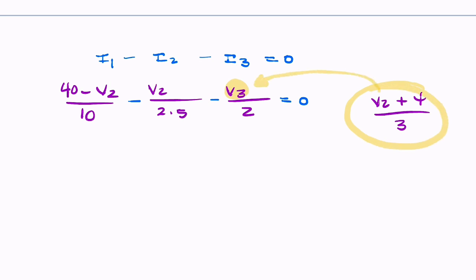So now, it's getting more and more like a linear mathematical problem. 40 minus V2 over 10 minus V2 over 2.5 minus V3 plus 4 over 3. Wait, I've got over 3 over 2. So that's going to be over 6. So I'll just write it at 3 times 2 equals 0. So now, I only have one unknown which is V2.